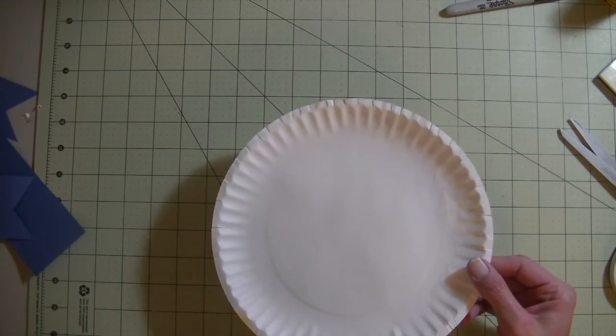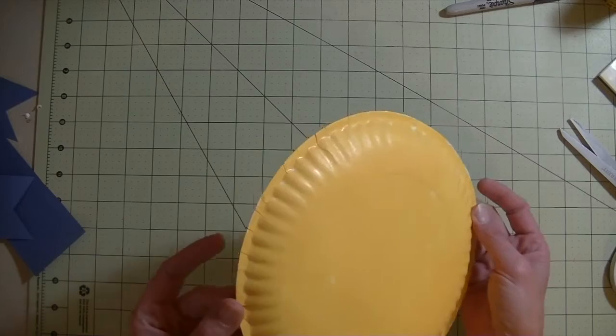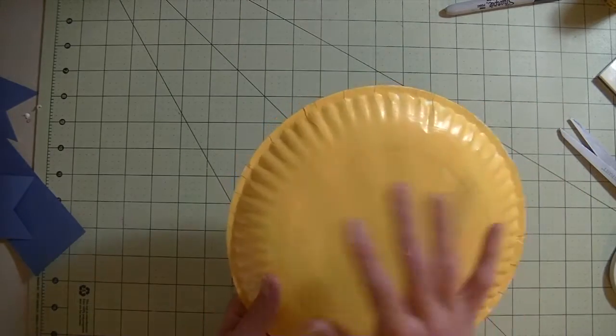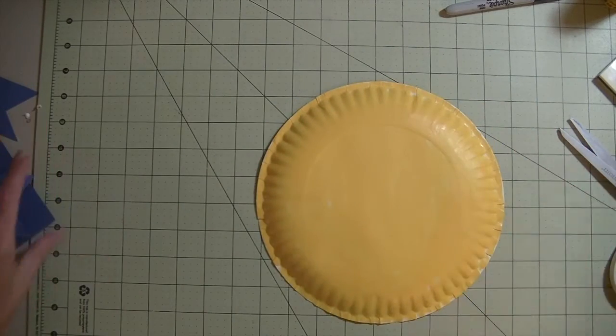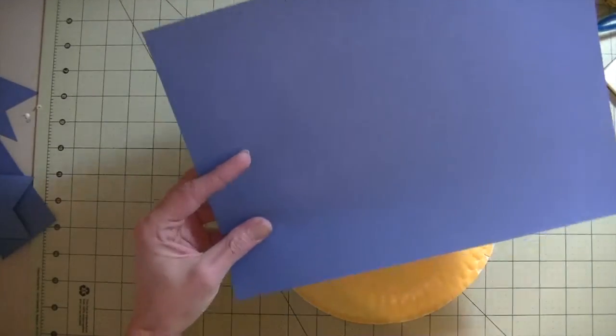This is the part you would eat on - I painted on this side here. Then you want to grab some construction paper, and again this can be any color you'd like.